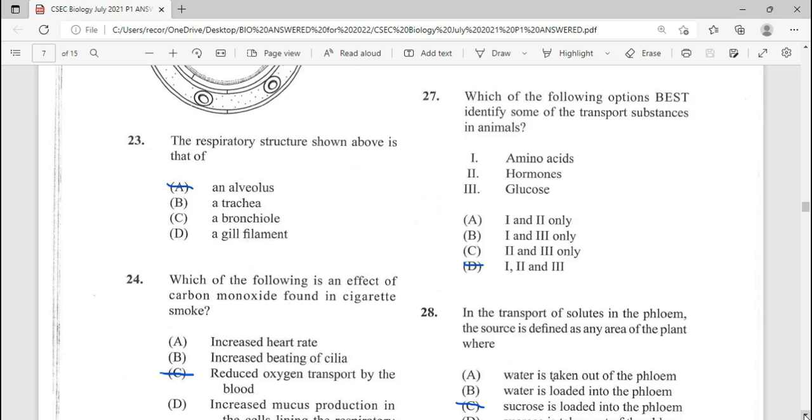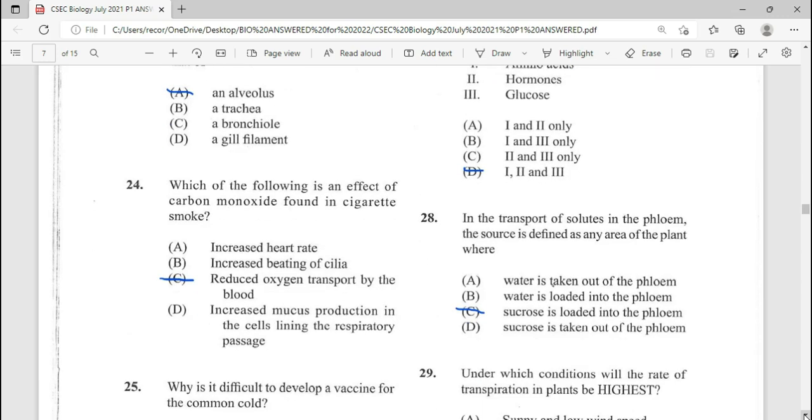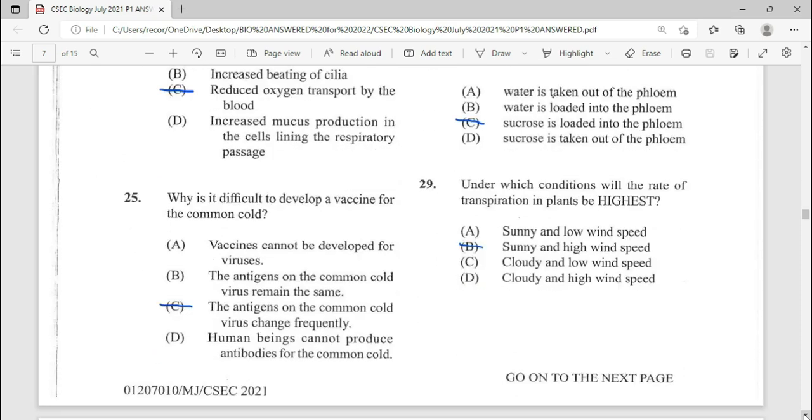27, which of the following option best identifies some of the transport substance in animal? Repeated question. Our answer here is going to be D. Number 28. In the transport of solutes in the phloem, the source is defined as any area of a plant where sucrose is loaded into the phloem. C is our answer for 28.